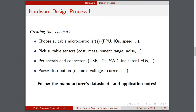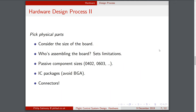Application notes are very useful — for example, on crystal oscillator design and how to choose the right loading capacitors. Once you've created and checked the schematic, you need to pick the physical parts. STM32 microcontrollers come in different packages: LQFP, BGA, with 64, 100, or 144 pins. The same applies to resistors and capacitors. You also have to consider board size — you don't want a huge board for a drone. The board I ended up making for the first prototype is 6cm by 9cm.